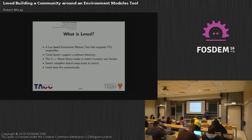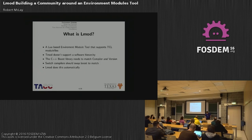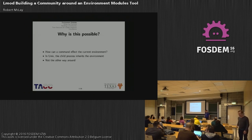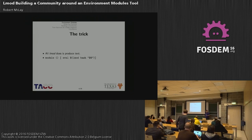Lmod was designed to solve a particular problem: if you have compiler-dependent modules — like Boost, a C++ library — and you change compilers, you'd like the version of Boost you're using to change automatically. On Unix, we all know that child processes inherit from their parent, not the other way around. So how can you run a command that changes the environment? It's a trick: all environment module commands do is generate text, then use a shell function that runs Lmod, tells it to output bash syntax, and evaluates the result. That's how you change your current environment.